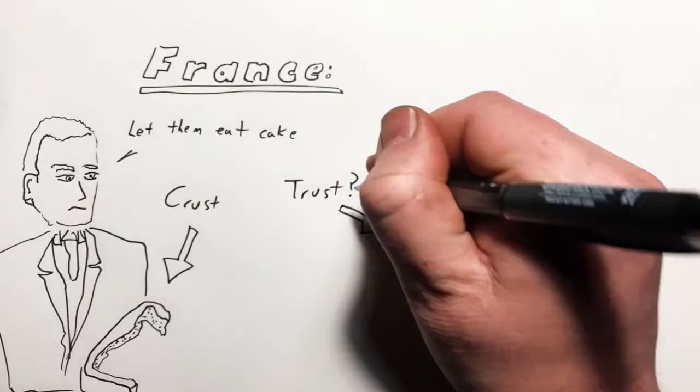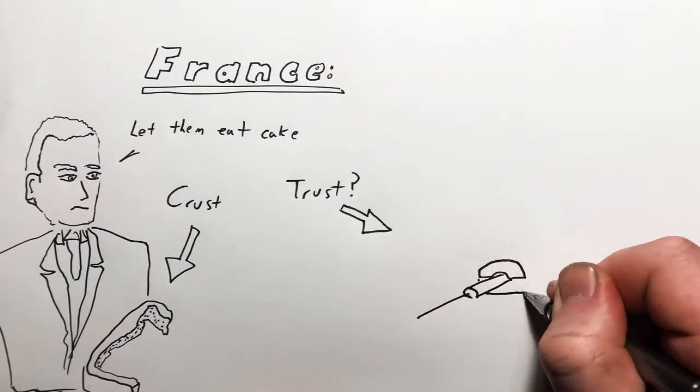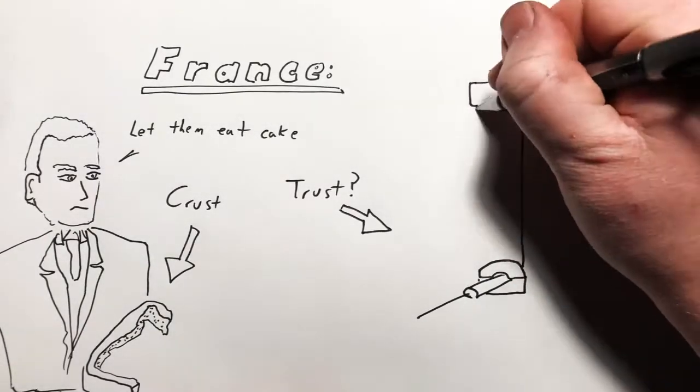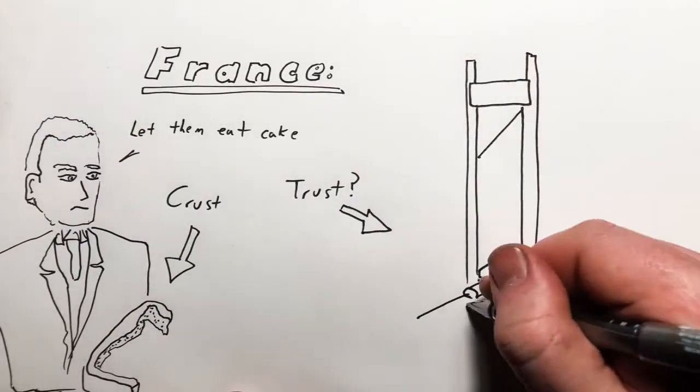First of all, the EU made an absolute pig's ear of its Covid response, from evangelising open borders in the midst of a pandemic to promising a strong financial response. It was ultimately a bit like the dragon my little boy drew the other day. You know, very cool on paper, but utterly fictitious.